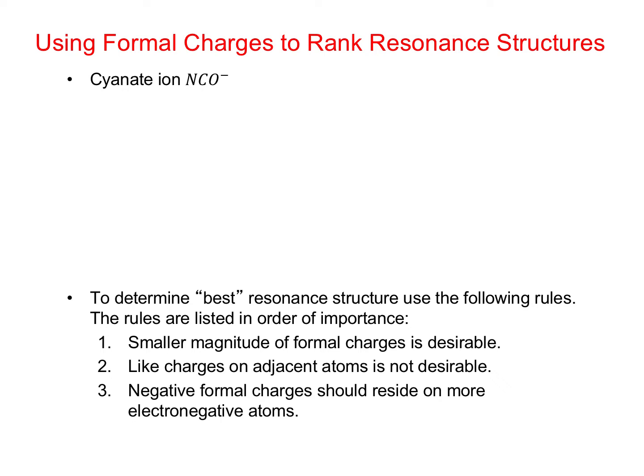Let's start by drawing the resonance structures for the cyanate ion. In the last video we had cyanide, CN⁻. Cyanate is NCO⁻, so carbon being least electronegative will be our central atom. For the valence electrons: carbon gives 4, oxygen 6 gives us 10, nitrogen 5 gives us 15, plus a negative charge gives us 16 valence electrons.